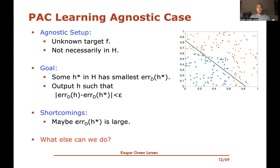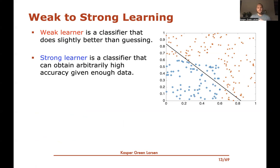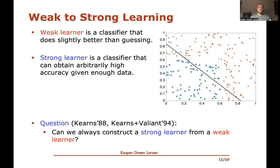Another approach is weak to strong learning, which our paper is about. A weak learner is a classifier that does slightly better than guessing — for instance, a hyperplane that isn't perfect but gets better than half the data correct. A strong learner, given enough training data, can guarantee arbitrarily high accuracy. A question asked in 1988 and again in 1994 by Kearns and Valiant: can we always construct a strong learner if we have a weak learner?